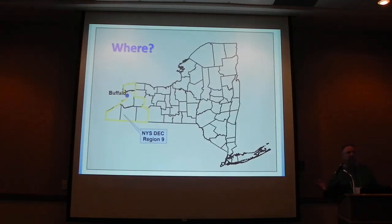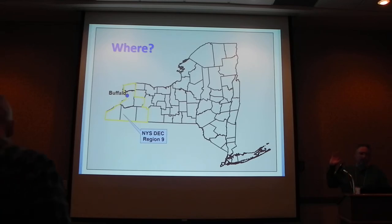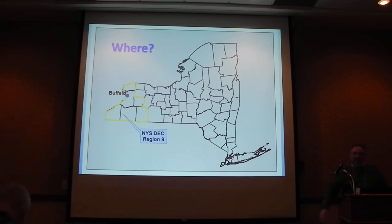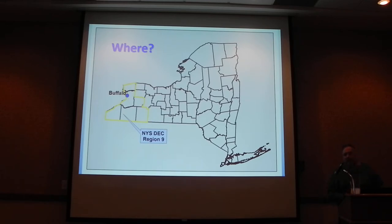The area we're talking about is as far from where we're sitting right now as you can get and still be in New York State — the far western six counties of the state. In this region we have almost 600 streams total with over 1,000 miles that support wild trout populations. So we've got a lot of water out there to look at.